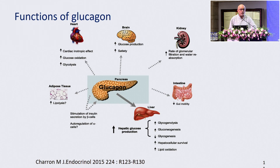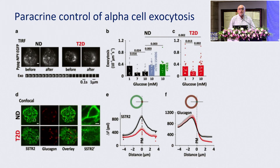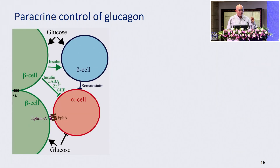Glucagon works at the heart, works at the brain where it increases glucagon production and satiety, works at the kidney where it increases eGFR, works at the intestine where it decreases gut motility, works at the liver where it really does all its work, and of course works in the pancreas. The major control of glucagon and insulin is not by anything else — it is by themselves. There is a paracrine control in the alpha cell and the beta cell, with external factors like insulin and GABA, but the most important control of the beta cell is the alpha cell.